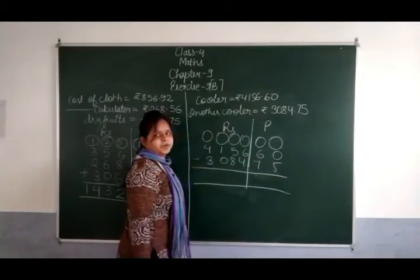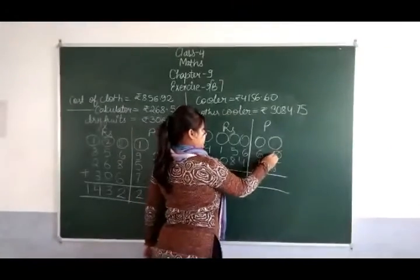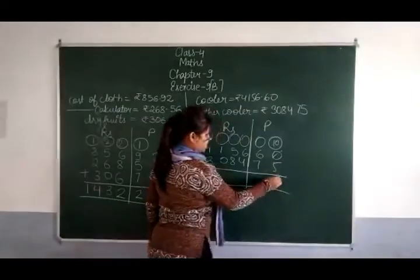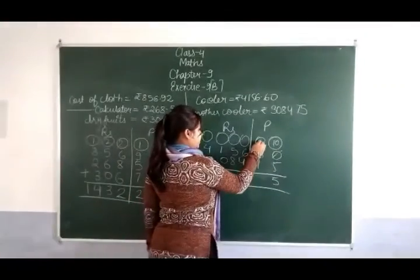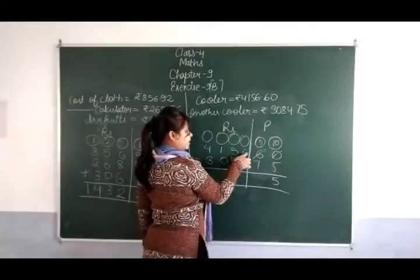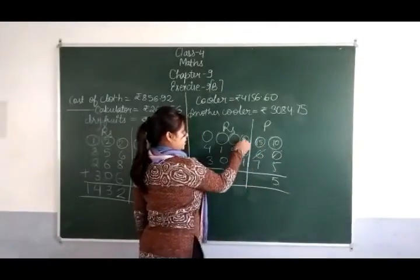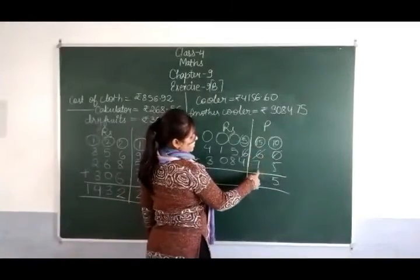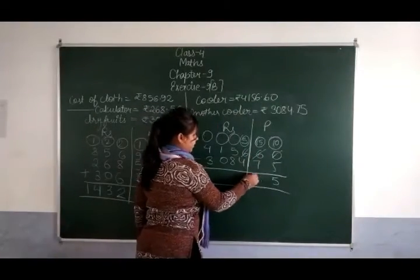0 में से 5 subtract नहीं होंगे, तो 1 carry करेंगे — 10 हो जाएगा। 10 में से 5 गए तो 5 remaining। इसने अपना 1 यहाँ दिया — 5 हो गया। 5 में से 7 नहीं जाएंगे, तो 1 borrow करेंगे — 15 हो जाएगा। 15 में से 7 गए — 8 remaining। 5 में से 4 गए — 1।